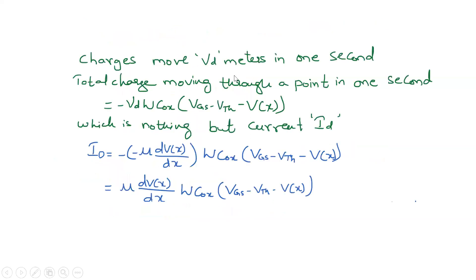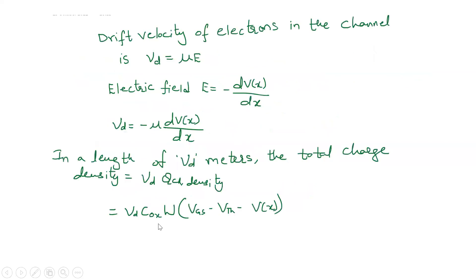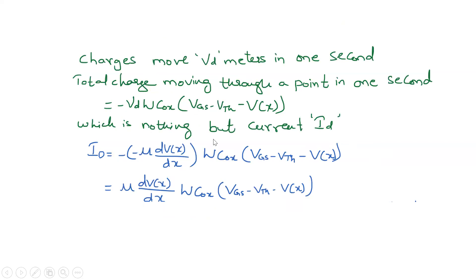The meaning of drift velocity is that the charges move V_d meters in one second. So the total charge moving through a point in one second — which is the current — equals V_d times Q_channel density, that is V_d times C_ox times W times (VGS minus Vth minus V(x)). Substituting the expression for V_d, we get the drain current as mu times (dV(x)/dx) times C_ox times W times (VGS minus Vth minus V(x)).